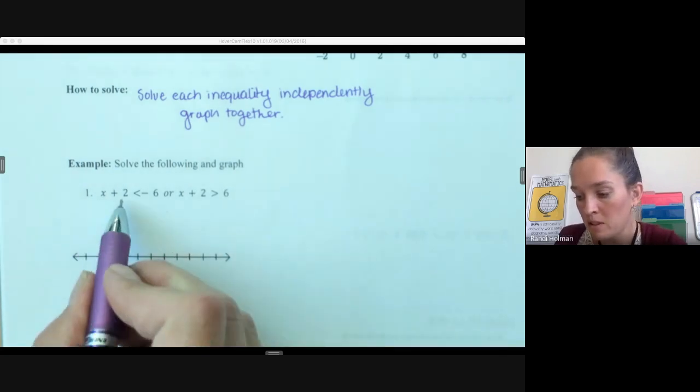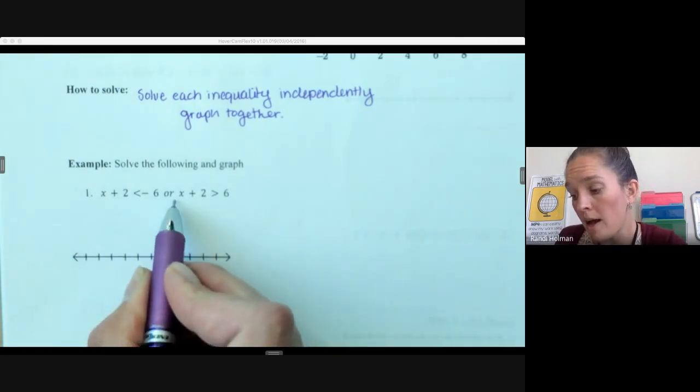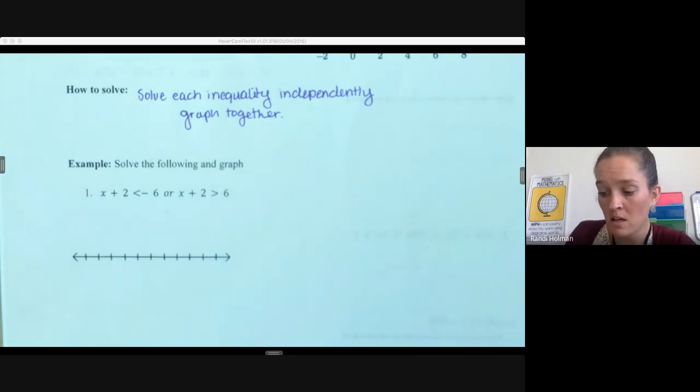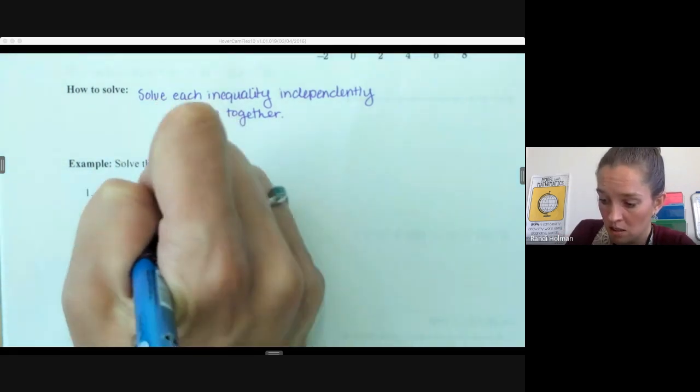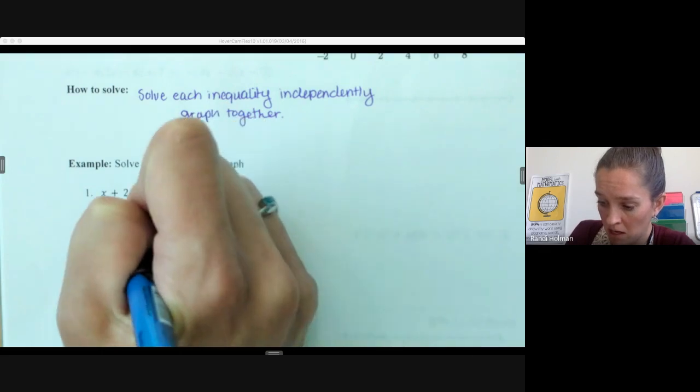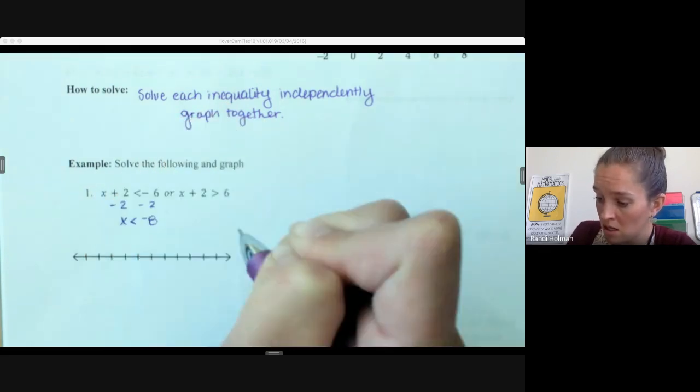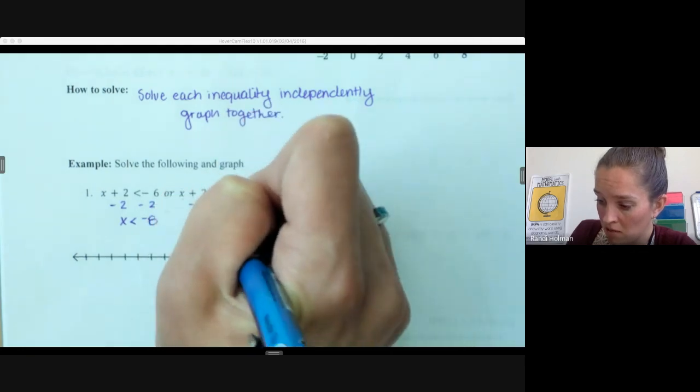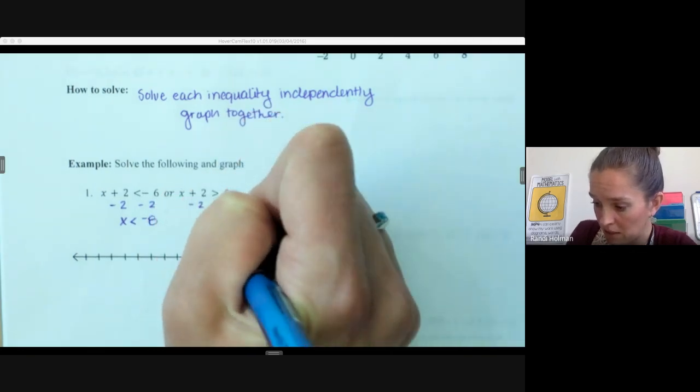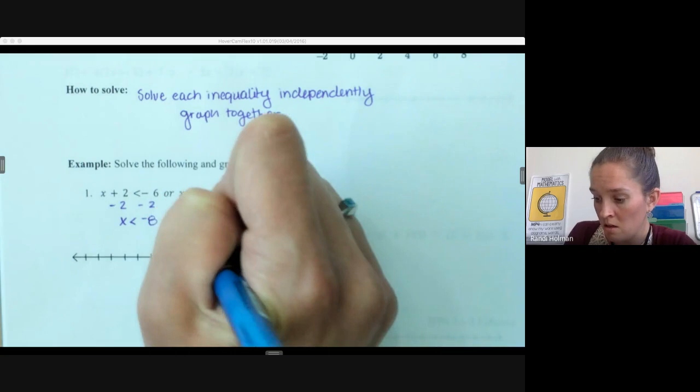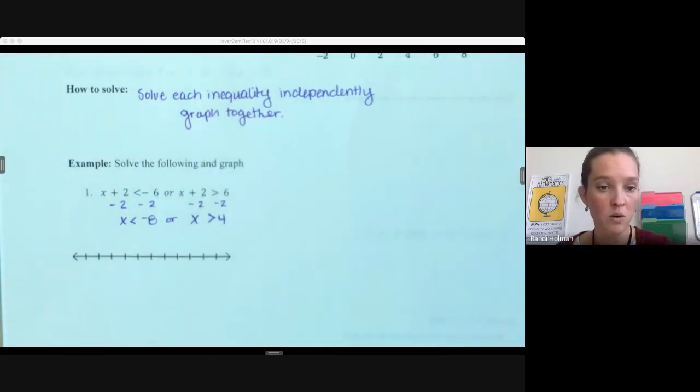So if I have x plus 2 is less than negative 6 or x plus 2 is greater than 6, we're just going to solve each of these independently from each other, keeping in mind solving inequalities is just like solving equations unless we multiply or divide by negative then we have to flip that symbol. So then we get these two inequalities: x is less than negative 8 or x is greater than 4.